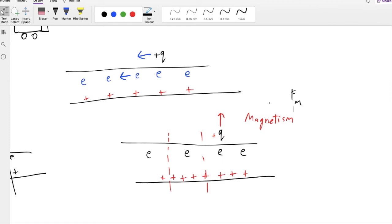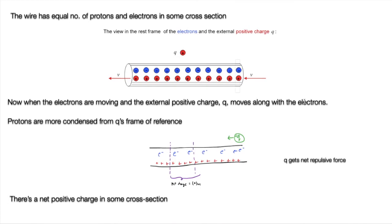This is the reason why we say that moving charges produce magnetic fields. It's not exactly a magnetic field or a proper usual sense magnetic field. It's a magnetic effect, or a relativistic effect of electromagnetism, electrostatics, which gives the effect of magnetism. Here you can see, protons are more condensed from Q's frame of reference. In a particular frame of reference, the net charge seems positive. So Q gets a net repulsive force.